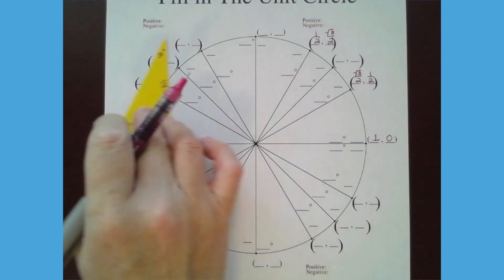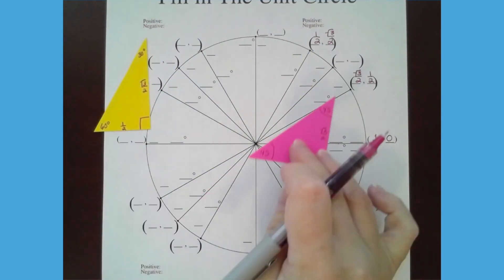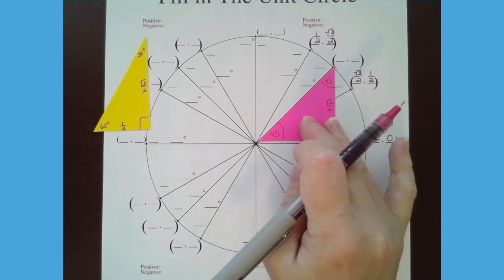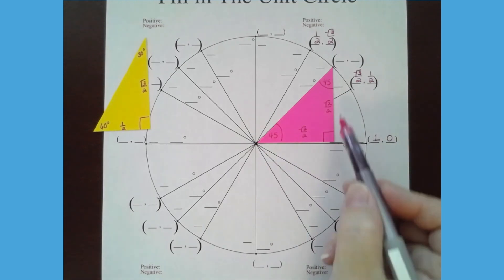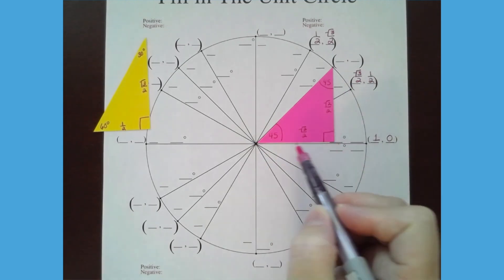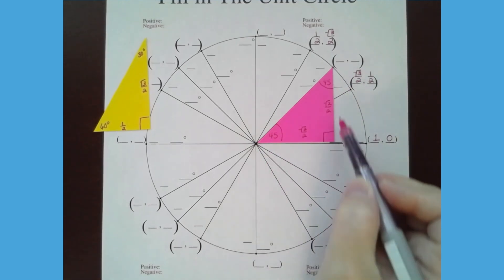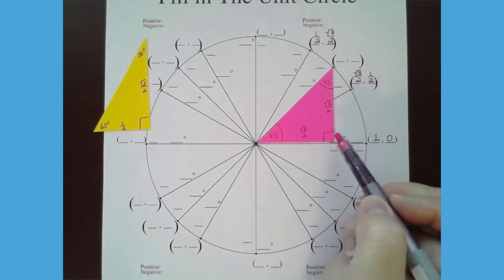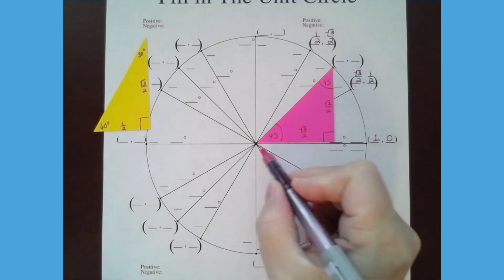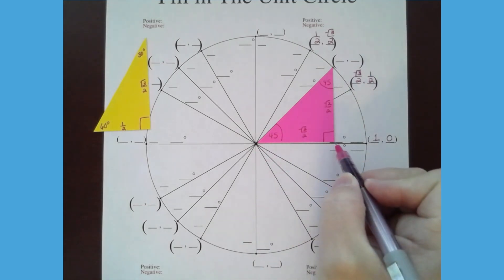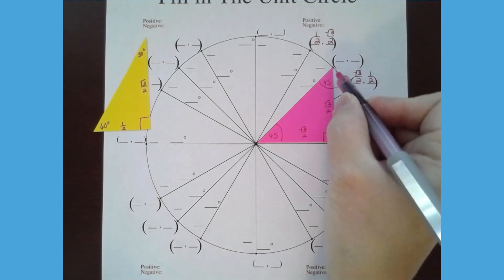There's one more person we got to talk about, and that's the 45-45-90. So let's put this little triangle in there. There he is. And so to get to this point, remember a 45-45 has the same base and height. We talked about that in video one. And so I go root two over two over and square root two over two up.